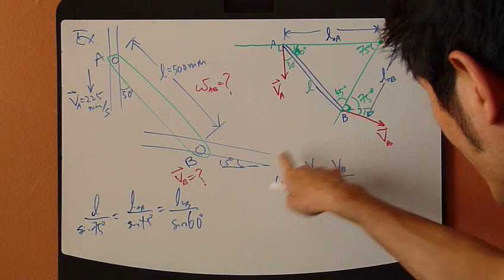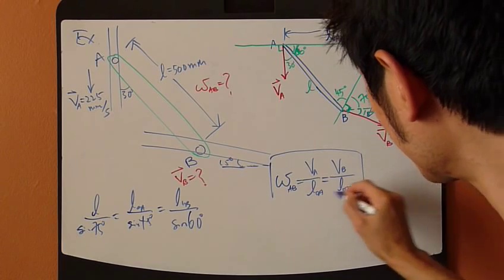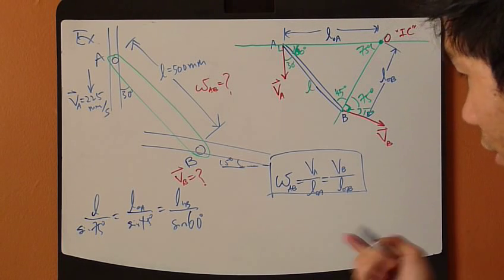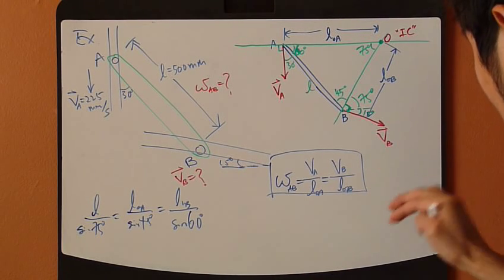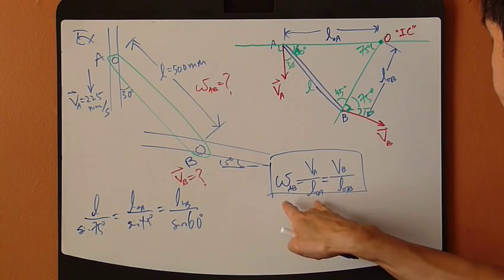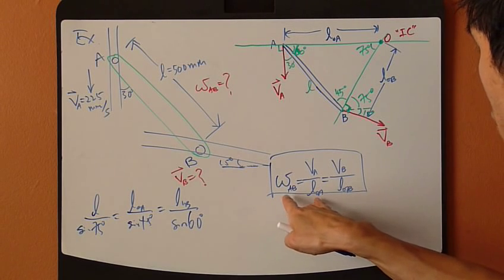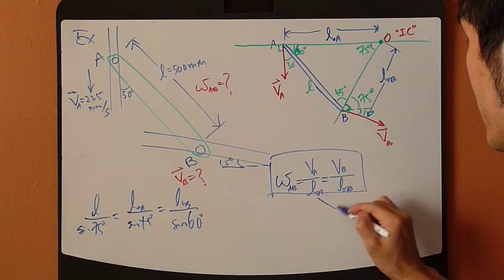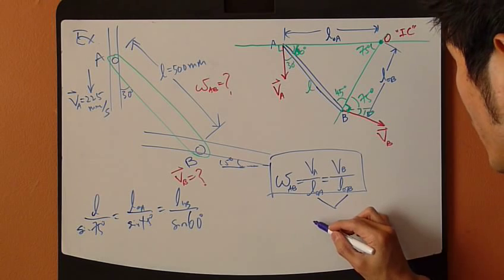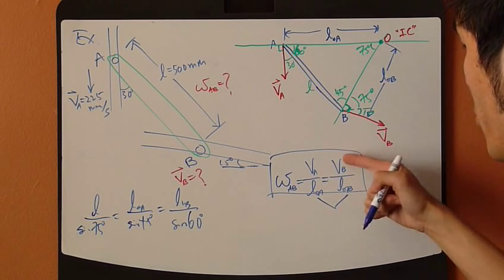Then, come back to this equation right here and find the unknown. Let's do it. So, I'm going to use, let's say, this pair right here. So, my unknown for this pair then would be VB.